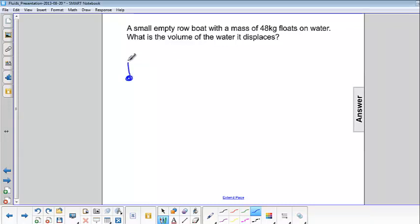Our free body diagram would look like this. Buoyant force up and the weight of the rowboat down. Since it's floating, they must be equal to each other.